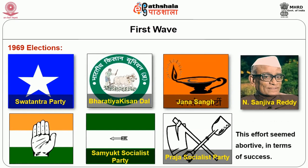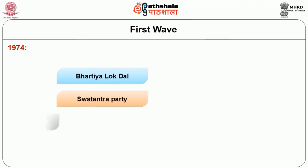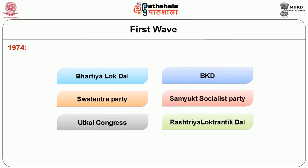Another example of parties coming together was in 1969 when Swatantra Party, Bharatiya Krishi Dal, and Jana Sangh came together to support the candidature of Neelam Sanjiva Reddy for the presidency against the Congress candidate V.V. Giri. In 1974, Bharatiya Lok Dal was formed through the merger of Swatantra Party, Utkal Congress, BKD, SSP, and Rashtriya Lok Tantrik Dal. This coalition also did not survive long.